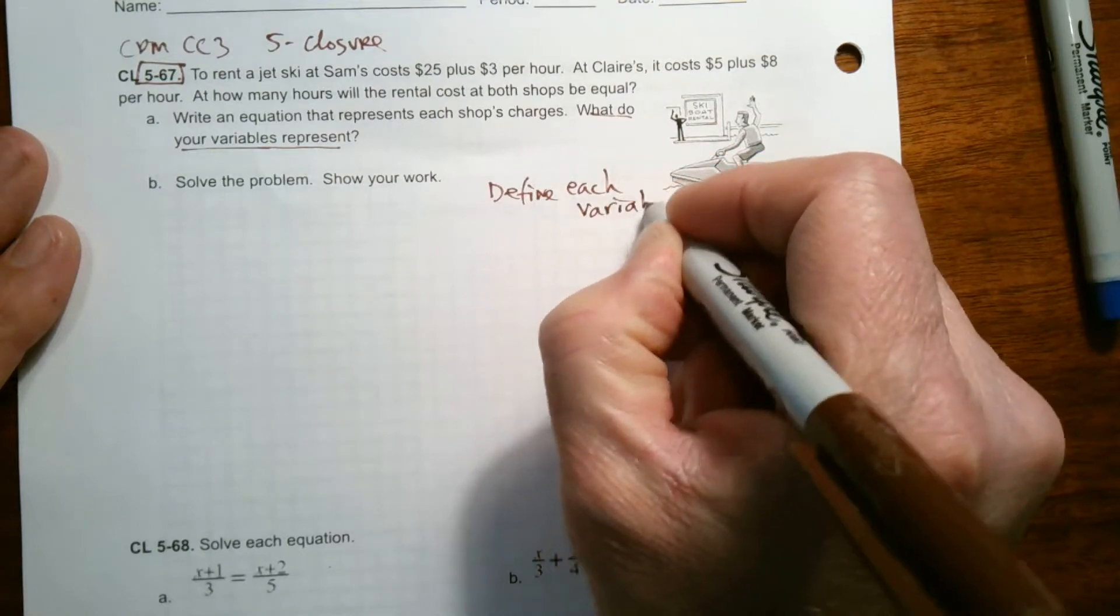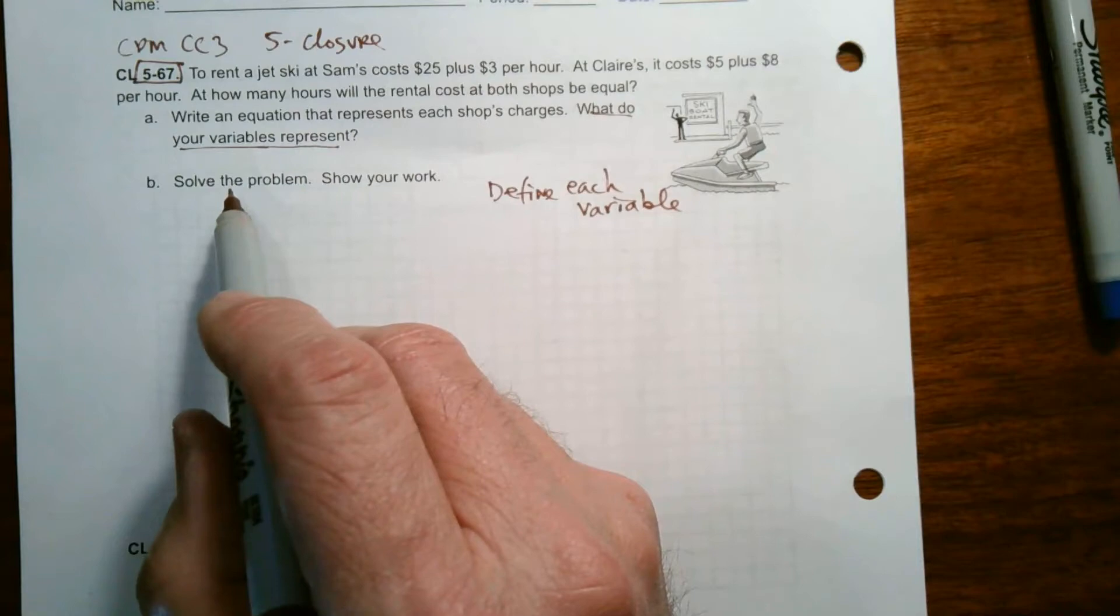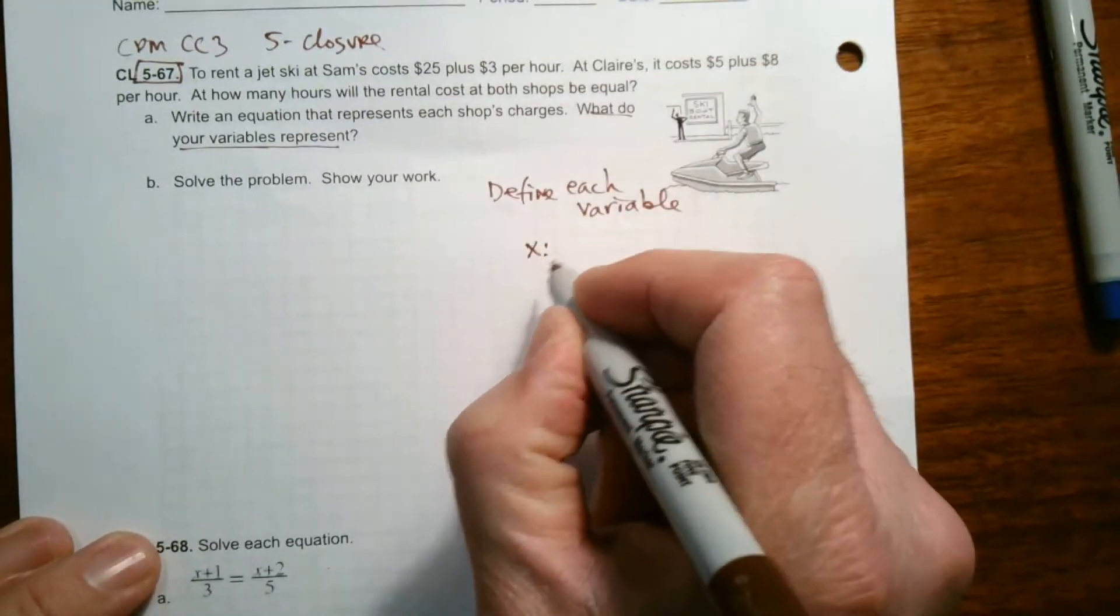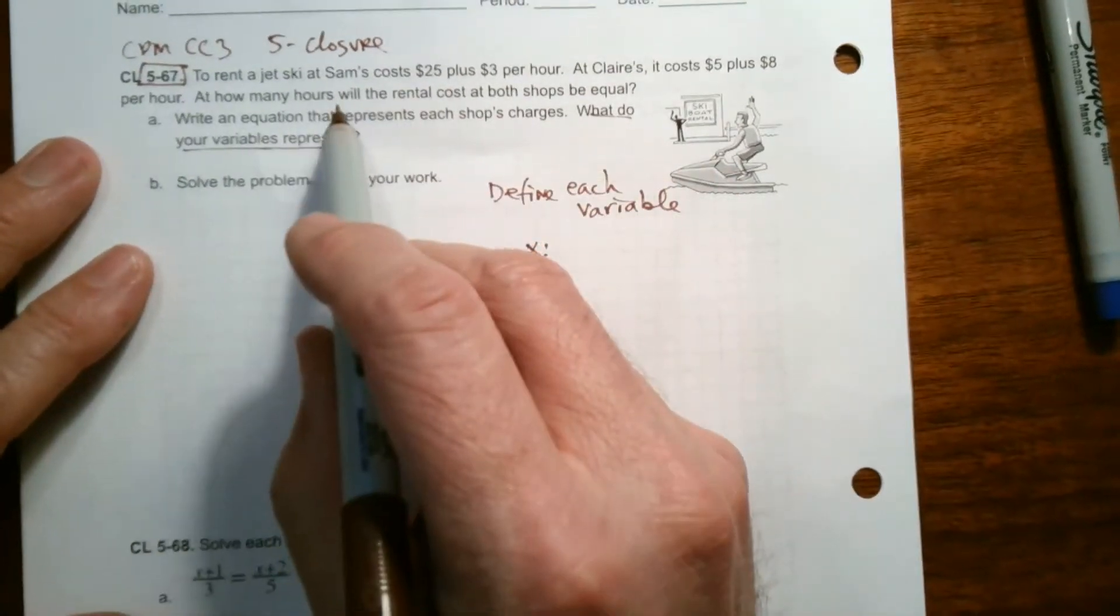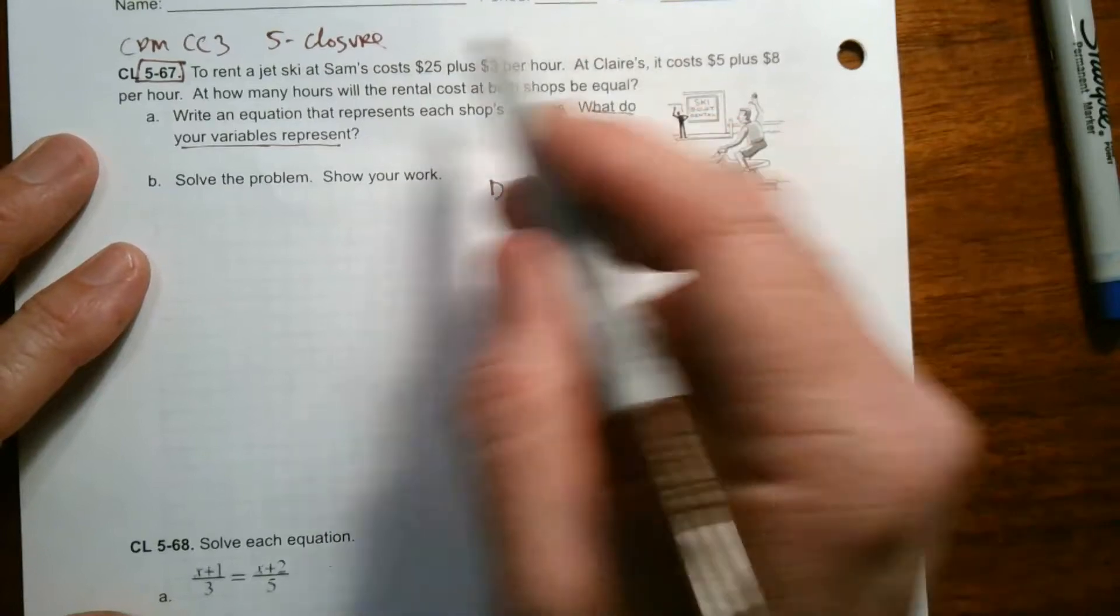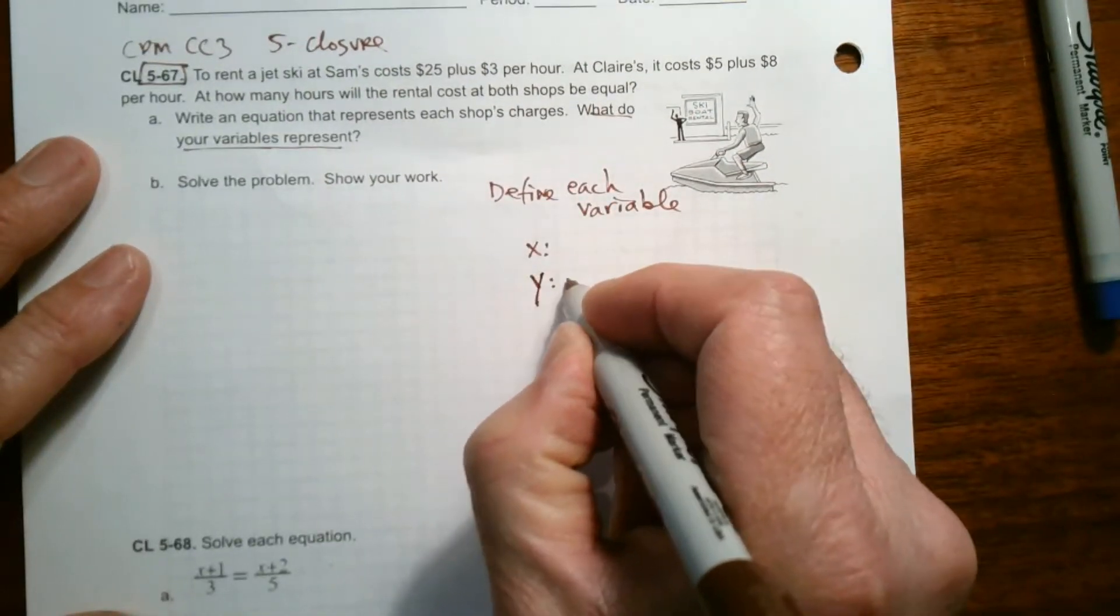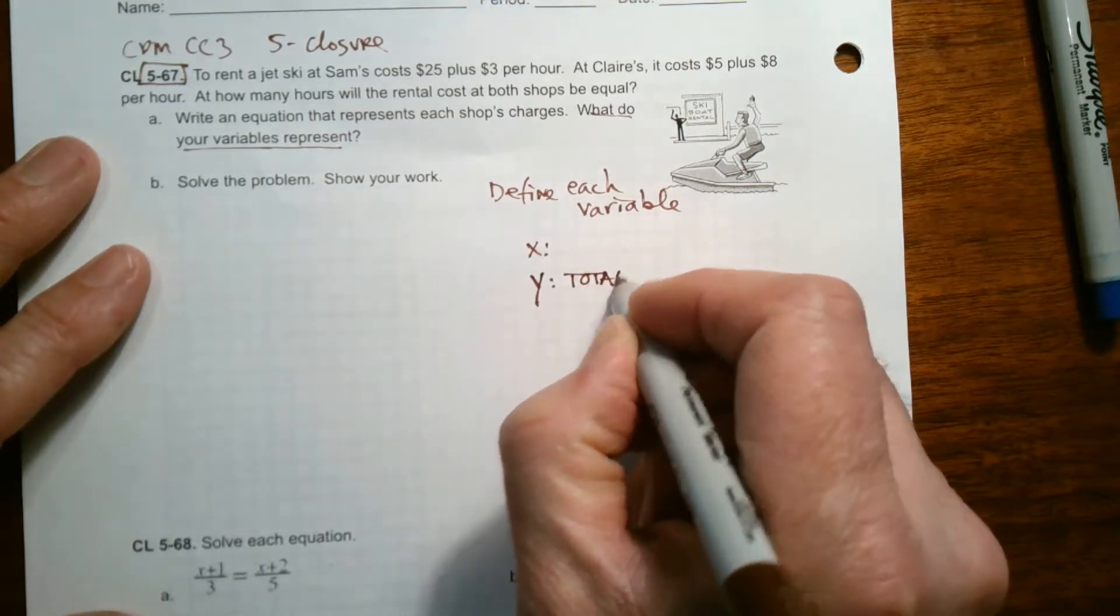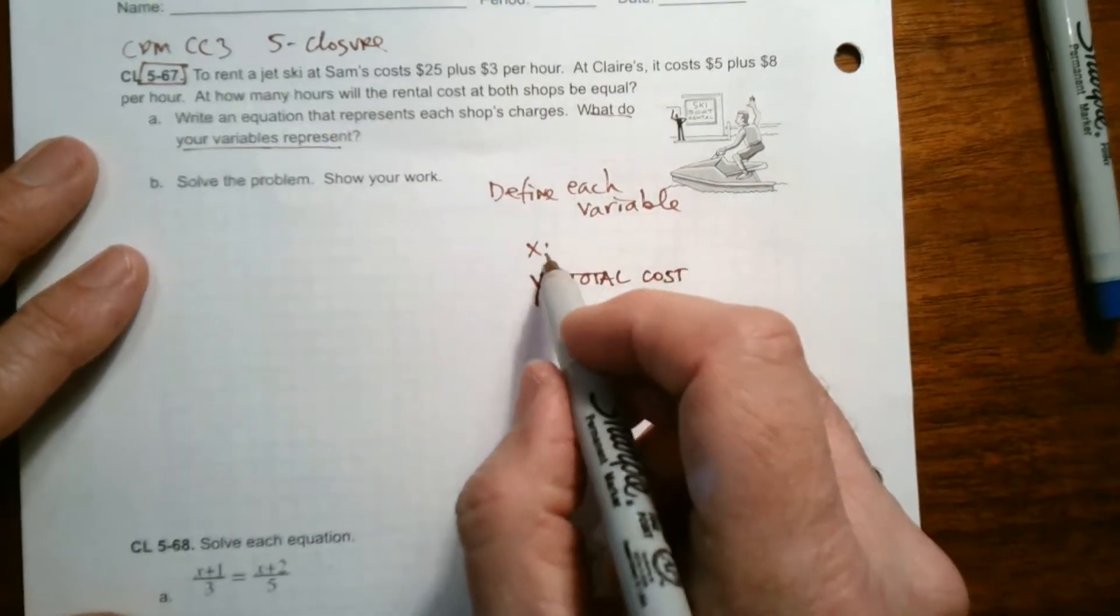When we're dealing with a system of equations, we have usually two variables. We have an X and a Y. And that's what I'll have, I'll have an X and a Y. Because I'm talking about the cost, that's my output. The total cost is my output. And my output is always my Y, the total cost, my output is what Y would be.